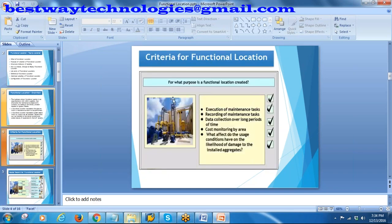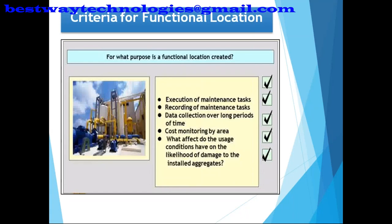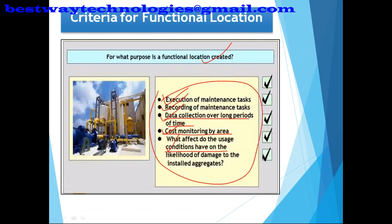Functional locations are created for these purposes: execution of your maintenance tasks, recording of your maintenance tasks, data collection over a longer period of time - to track maintenance tasks done for a particular location over time - and cost monitoring by area. To monitor all maintenance activities and their usage conditions, you will be creating the functional location.